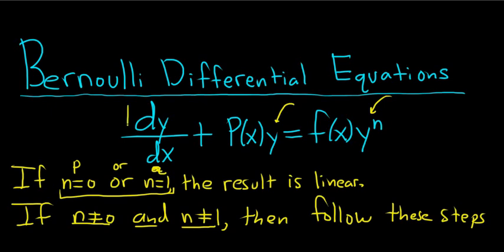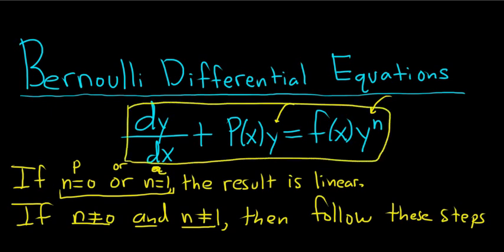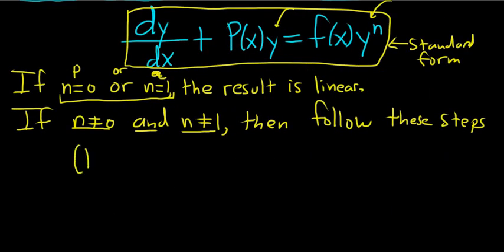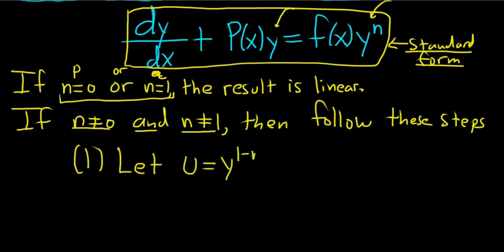By the way, this is said to be the standard form — let's call it that. So we're going to assume that before we do anything it's in standard form. Make sure it's in standard form — standard form is a priority. So step 1: you let u be equal to y to the 1 minus n. What a weird substitution — this is totally worth memorizing. Keep in mind n can be negative here, it's okay.